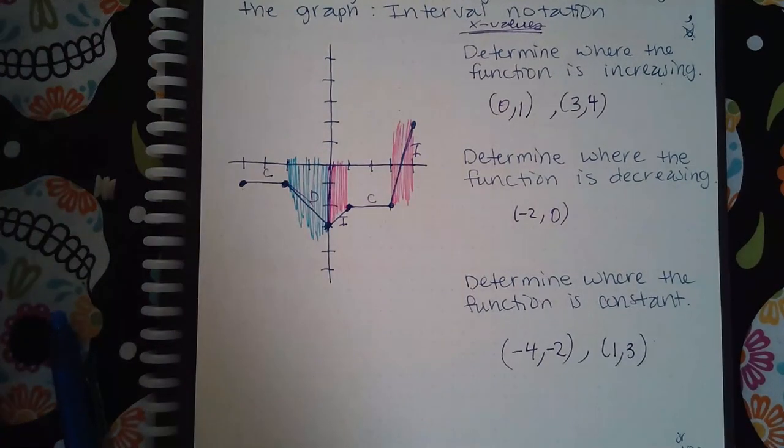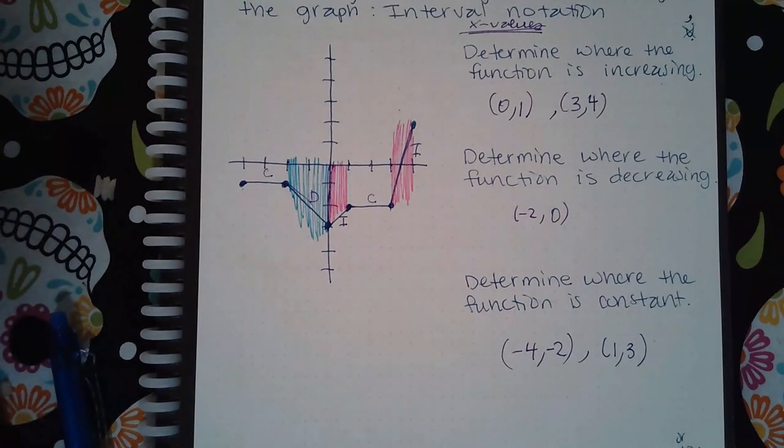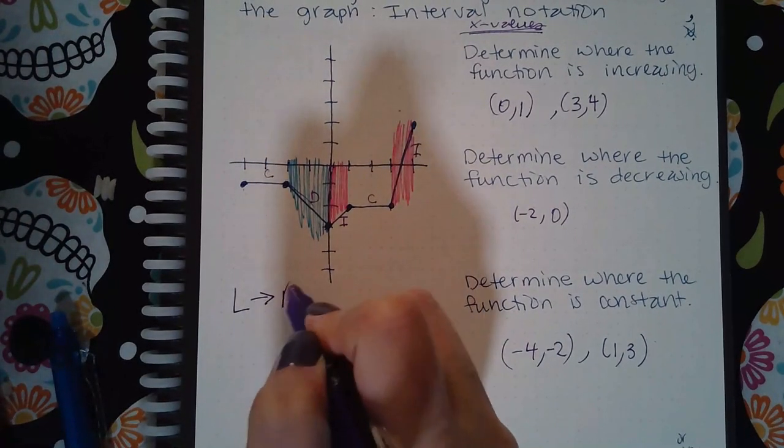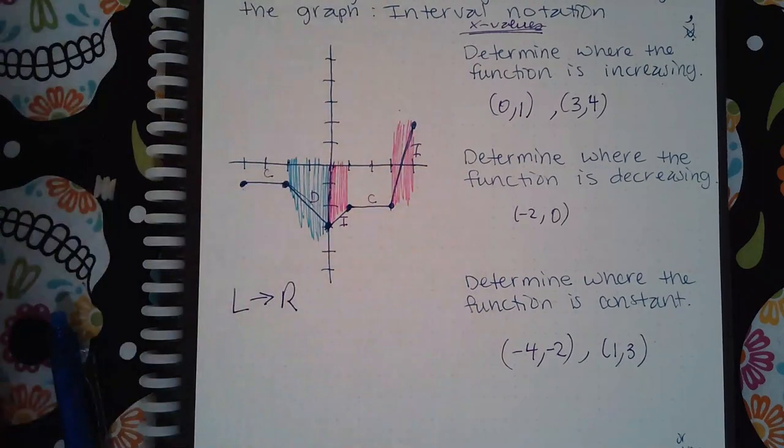That is how you determine the intervals for increasing, decreasing, and constant. Biggest thing though, again, is make sure you're going left to right when you label.